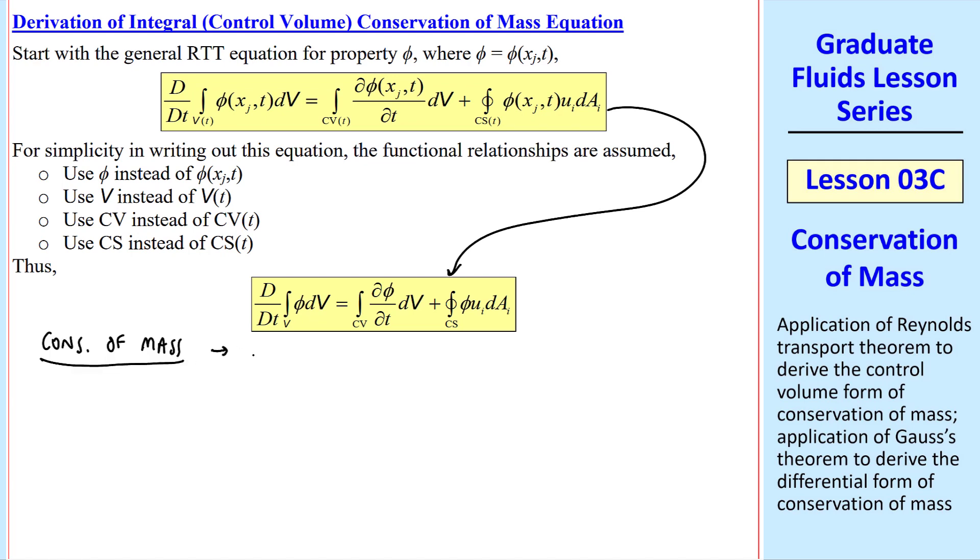For conservation of mass, we let phi be the density, rho. Therefore capital phi, this lower case phi or rho, times v, the volume, which becomes mass, m, since by definition density is mass per volume.